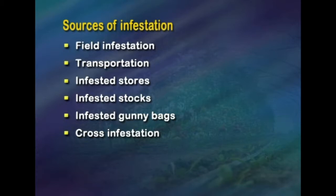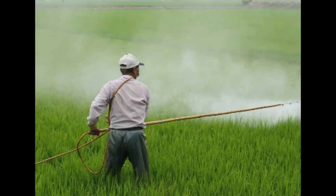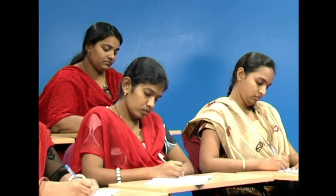Sources of infestation include field infestation, transportation, infested stores, infested stocks, infested gunny bags, and cross-infestation. Fumigation is a process of applying toxic fumes, vapor or gas of a substance to infested grain for a certain period in a reasonably airtight chamber. Fumigation should not be done more than two times; a third fumigation is only done when absolutely necessary. A prophylactic spray on the stack and around the stack, floor, and walls with malathion 0.5 to 1 percent is recommended before fumigation.